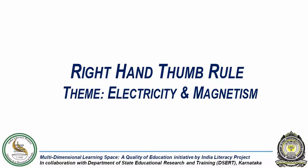In this experiment, we will understand how to use the right hand thumb rule to determine the direction of the electromagnetic field of a current carrying conductor.